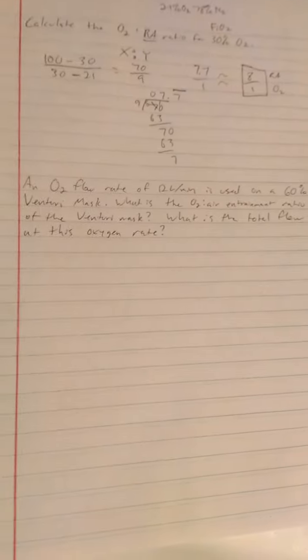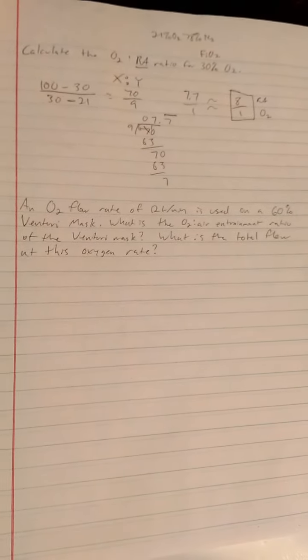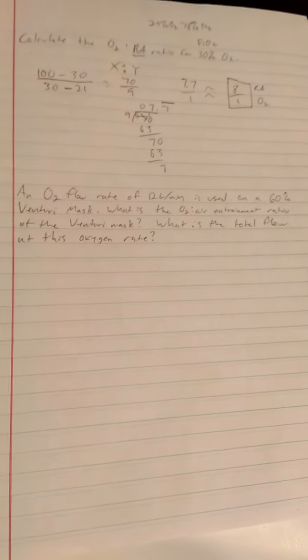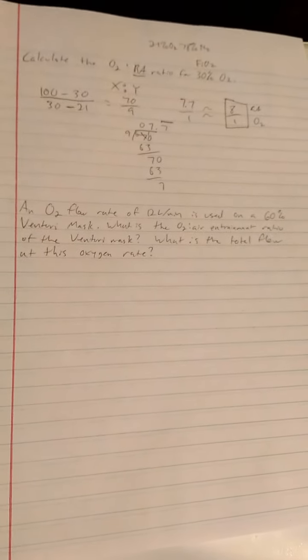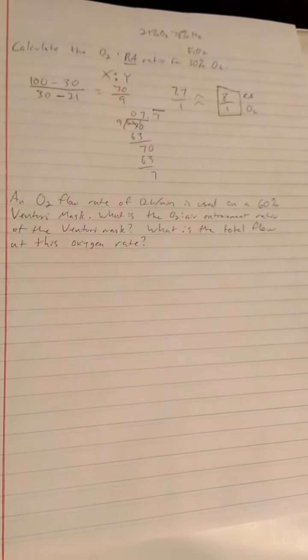This next question states: an oxygen flow rate of 12 liters per minute is used on a 60% venturi mask. What is the O2 air entrainment ratio of the venturi mask, and what is the total flow at this oxygen rate?